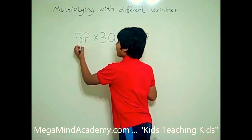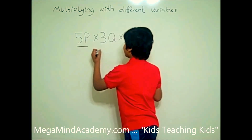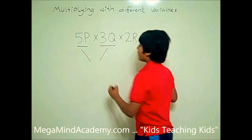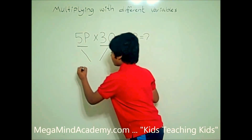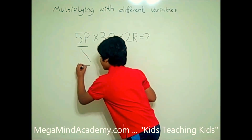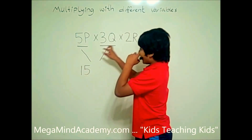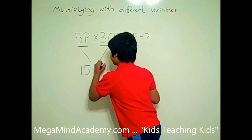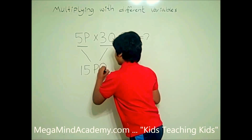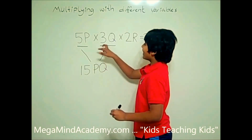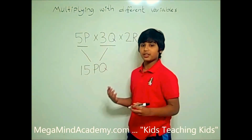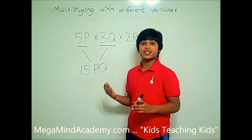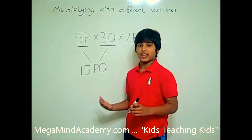First we're going to multiply 5p by 3q. 5 times 3 is equal to 15. p times q is equal to pq. You might ask, why is p times q equal to pq? It's because pq is the same thing as p times q — it's just written without the multiplication sign.